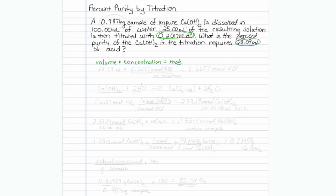Our volume is 28.09 mils. Our concentration is 0.2017 millimoles of HCl per milliliter of solution. When we multiply this out, it turns out that we have 5.6657 millimoles of HCl.